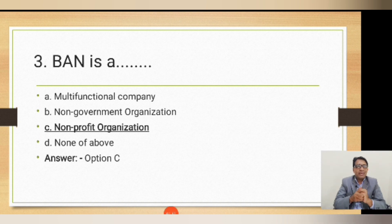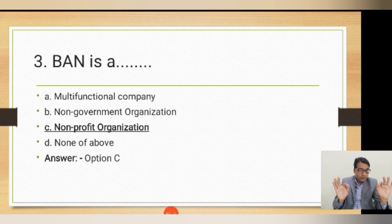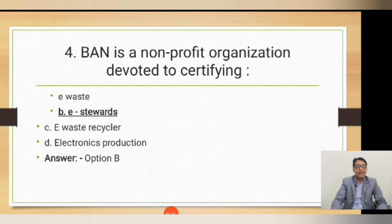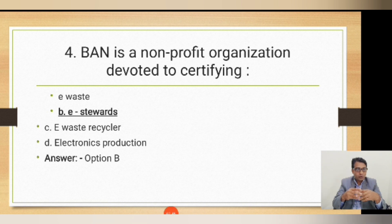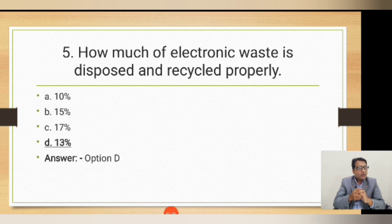The next question: BAN is an abbreviation for the Basel Action Network, an organization that works for e-waste. BAN is a non-profit organization. The correct answer is option C. BAN is a non-profit organization devoted to certifying e-waste recyclers — meaning it provides licenses to shops and centers where electronic waste can be properly disposed of.